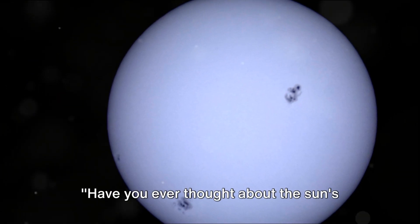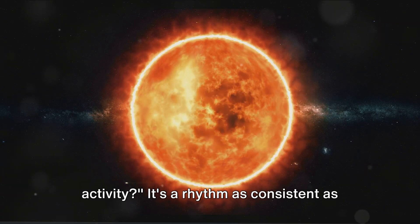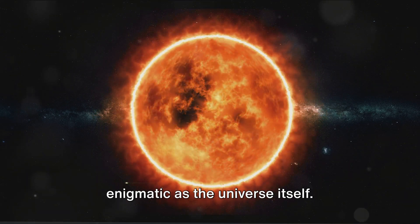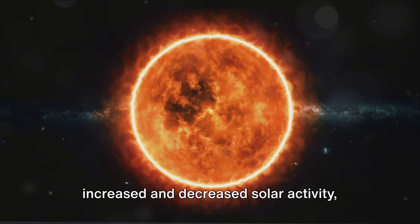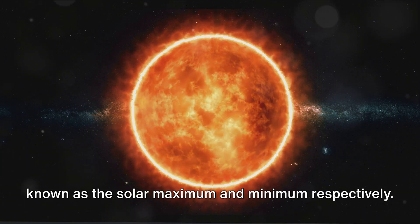Have you ever thought about the Sun's 11-year cycle of waxing and waning activity? It's a rhythm as consistent as the heartbeat of the cosmos, yet as enigmatic as the universe itself. This cycle is marked by periods of increased and decreased solar activity, known as the solar maximum and minimum, respectively.